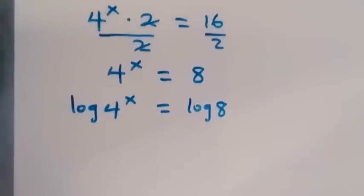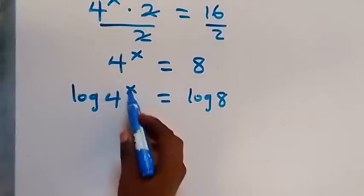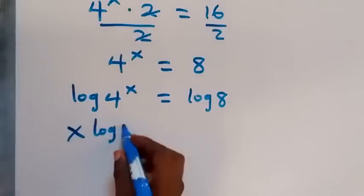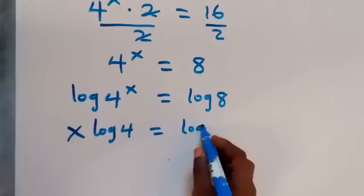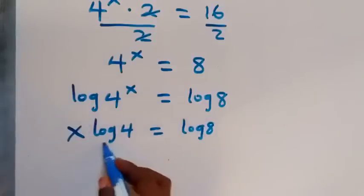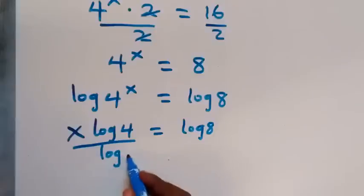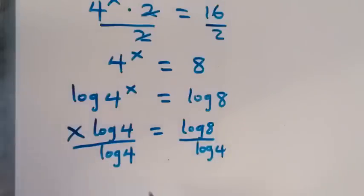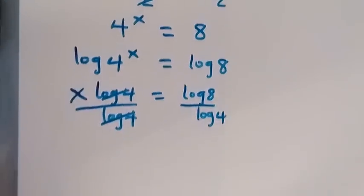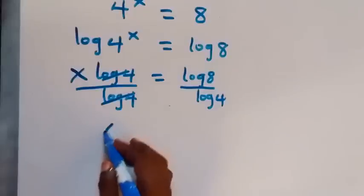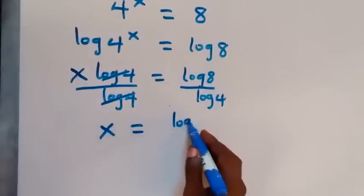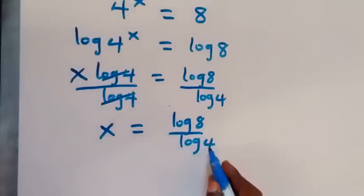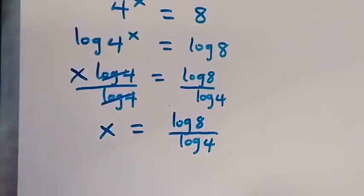We apply the power law of logarithms: the power x comes to the front, giving x times log 4 equals log 8. Then we divide both sides by log 4, the log 4s cancel, and we are left with x equals log 8 over log 4.